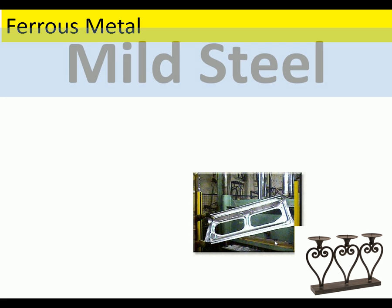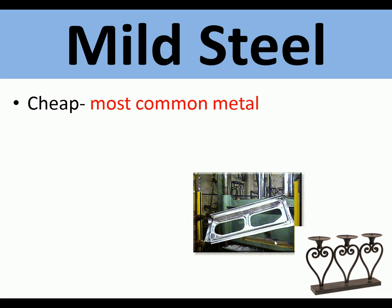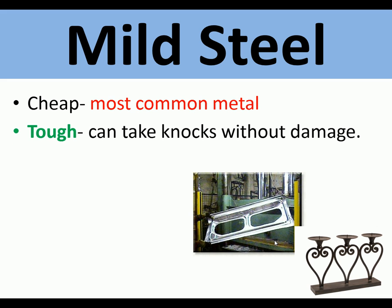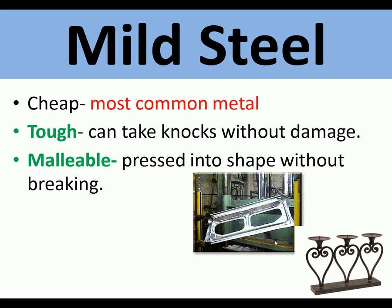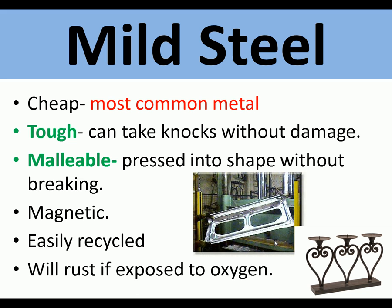Here's a ferrous metal: mild steel. It's cheap and the most common metal. It's tough — it can take knocks without damage. It's malleable, meaning it can be pressed into shape without breaking. It's generally magnetic. It is also easily and widely recycled. But it will rust if exposed to oxygen.